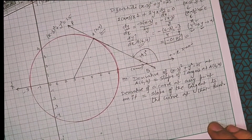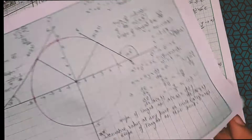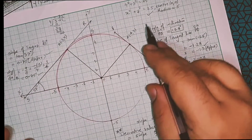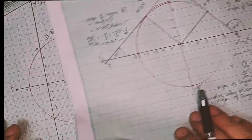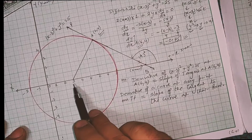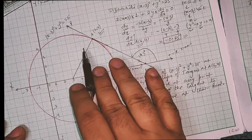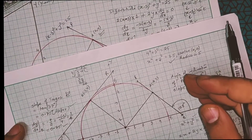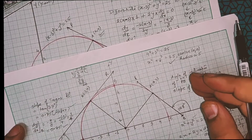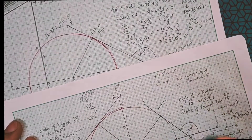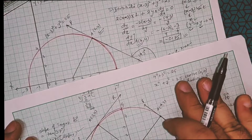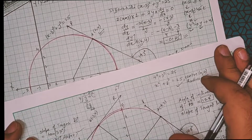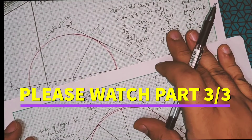Earlier we verified this result for the circle x² + y² = 25 with center (0,0) and radius 5. Now we have verified it again for the circle (x−3)² + y² = 25 with center (3,0) and radius 5. We will next verify the same result for some other curve to check whether this result holds more generally.